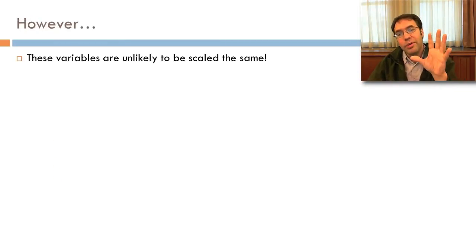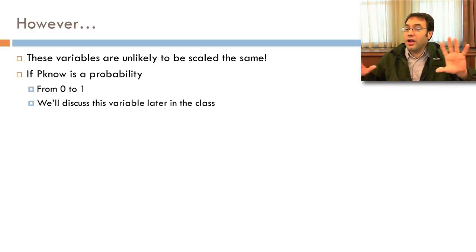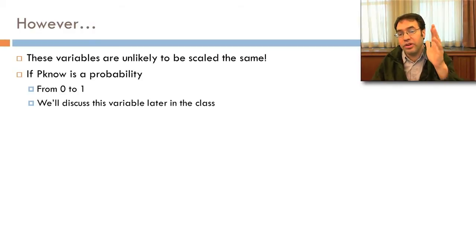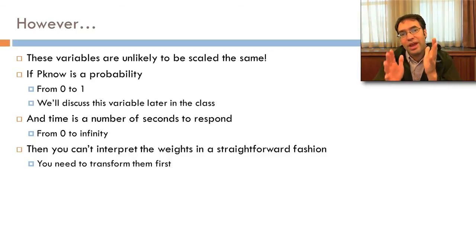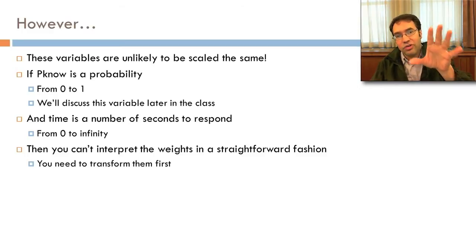However, it's worth pointing out that these variables are unlikely to be scaled the same. If p_no is a probability, it'll be from 0 to 1. We're actually going to discuss this variable in some more detail later in the class. P_no turns out to be a common way in educational data mining of referring to the probability the student knows the skill. And this task is called latent knowledge estimation. It's a type of regression, but in practice, it actually ends up getting treated as its own special case within educational data mining. And time is the number of seconds to respond. That's going to be from 0 to possibly infinity. Because of this, you can't interpret the weights on these in a straightforward fashion. Pinot is inherently going to have much bigger weights than time, so you need to transform them first.